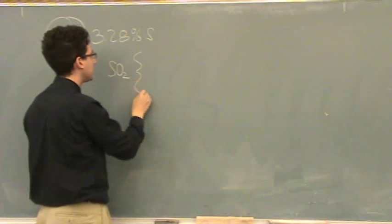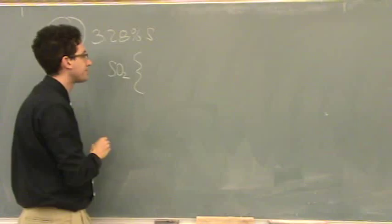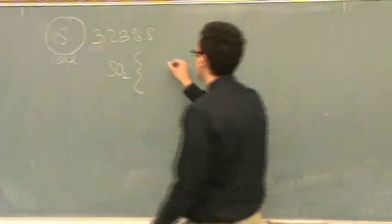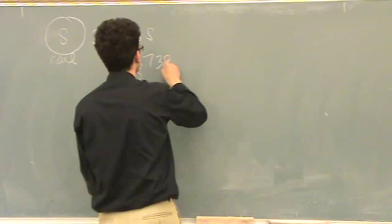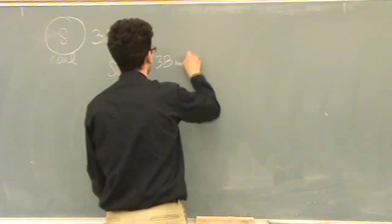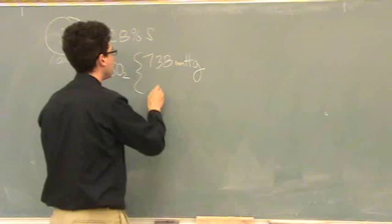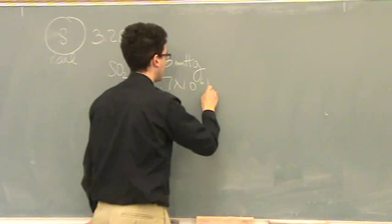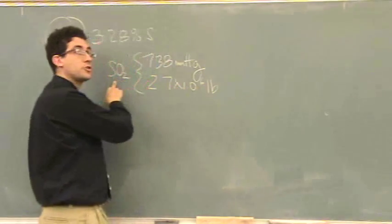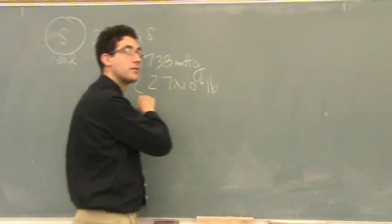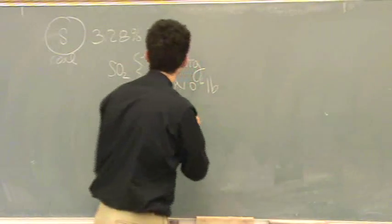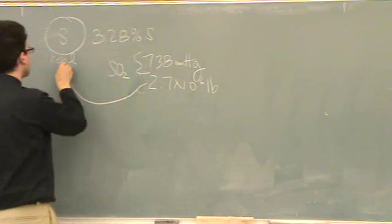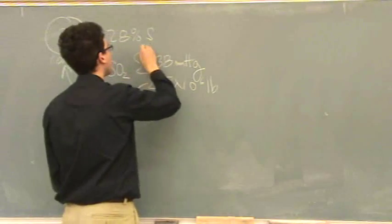And what are those numbers? Okay, so you're given 738 mmHg and 2.7 times 10 to 6 pounds. Of SO2 or of coal? Of coal is the pound, sorry. Okay, that's fine. And it's at 23 degrees Celsius for SO2.